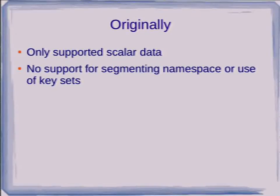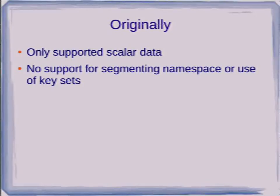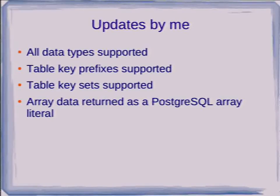Of course that might mean you get a whole lot of data back from Redis and then you're having to filter them on the Postgres side. Starting around last December I started doing updates. The first thing I did was make it work with Postgres 9.2, and then all data types are now supported — so you can have a table that deals with set objects, list objects, hash objects, or ordered set objects as well as scalar objects.